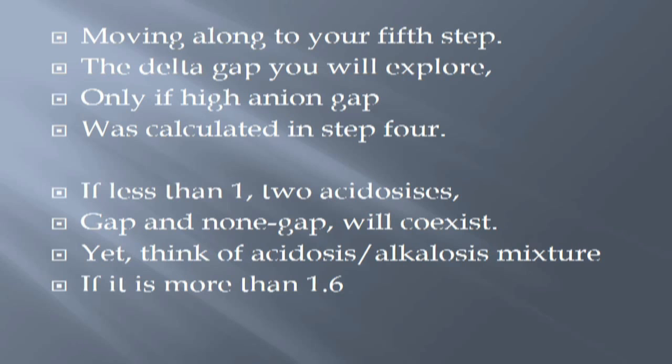Moving along to your fifth step — the delta gap you will explore. Only if a high anion gap was calculated in step four. If less than one, two acidoses — gap and non-gap will coexist. Yet think of acidosis-alkalosis mixture if it is more than 1.6.